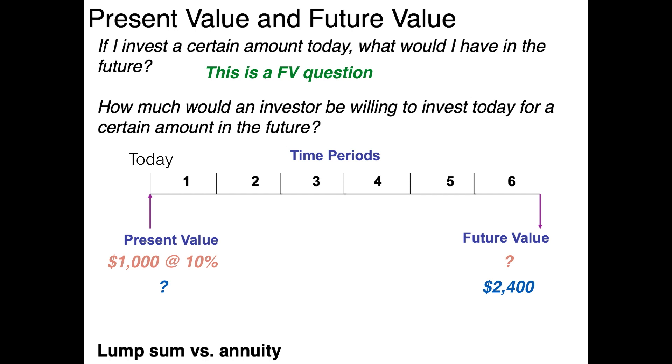If I were to ask how much I would have to invest each year over six years to have $2,400 six years from now, that would be an annuity — because the same amount is invested repeatedly over multiple periods.